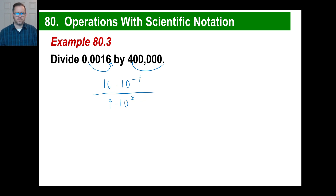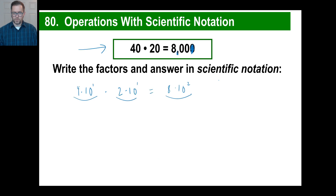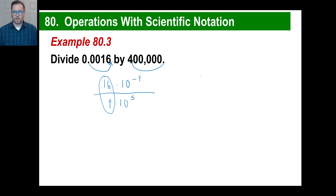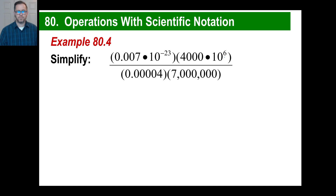When you multiply numbers in scientific notation — like 10 to the negative 7 times 10 to the 20th — you add the exponents. When you divide them, you subtract instead. So for 16 divided by 4, and 10 to the negative 4 divided by 10 to the fifth: 16 divided by 4 is 4, and negative 4 minus 5 is negative 9. That's all you do.